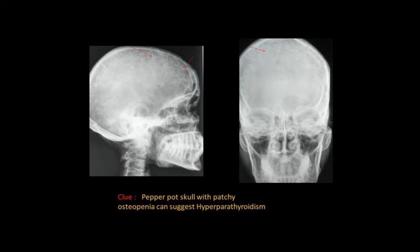This is an image of pepper pot skull with patchy osteopenia due to hyperparathyroidism. In hyperparathyroidism, the skull shows small dots like black pepper — pepper pot skull — with areas of patchy osteopenia, meaning bone weakness.